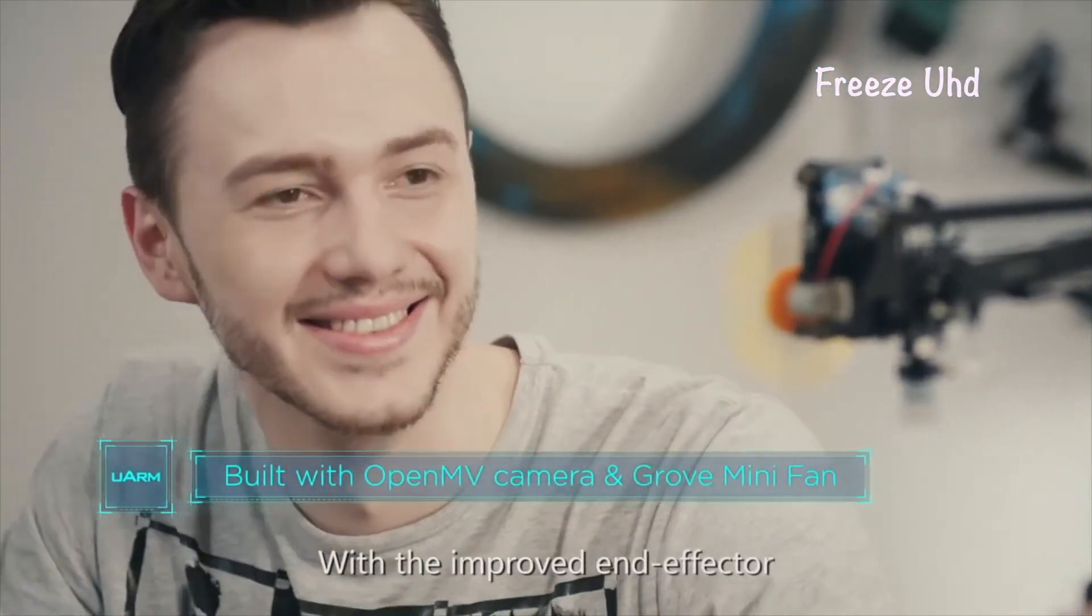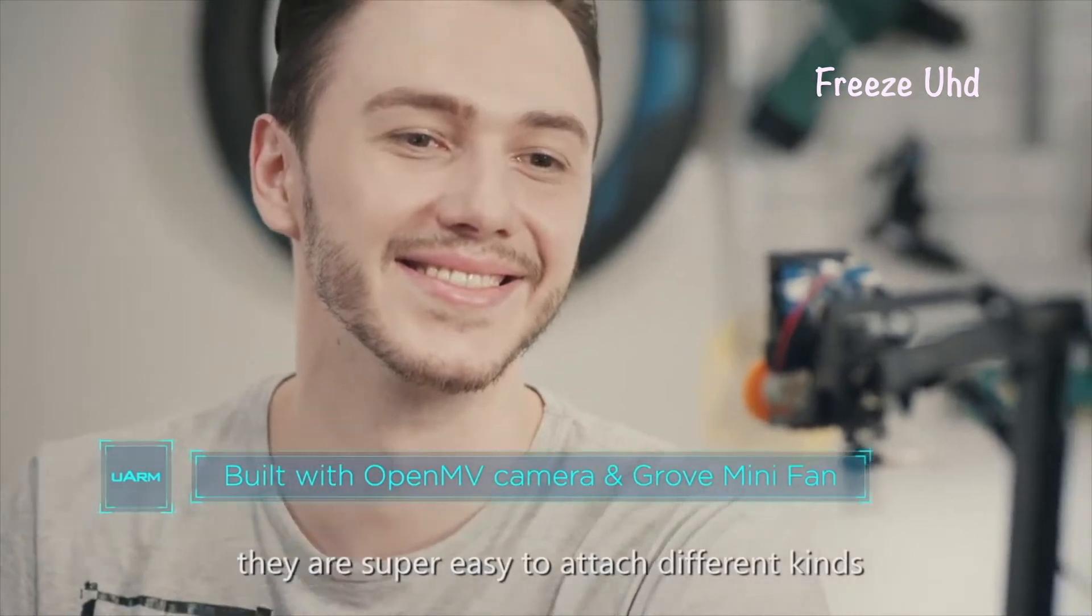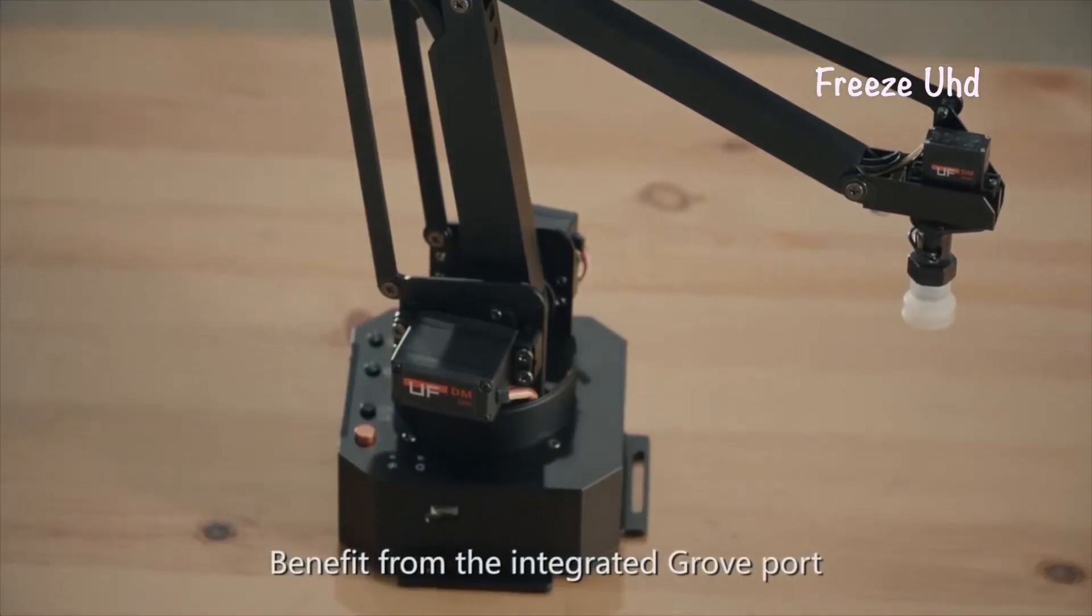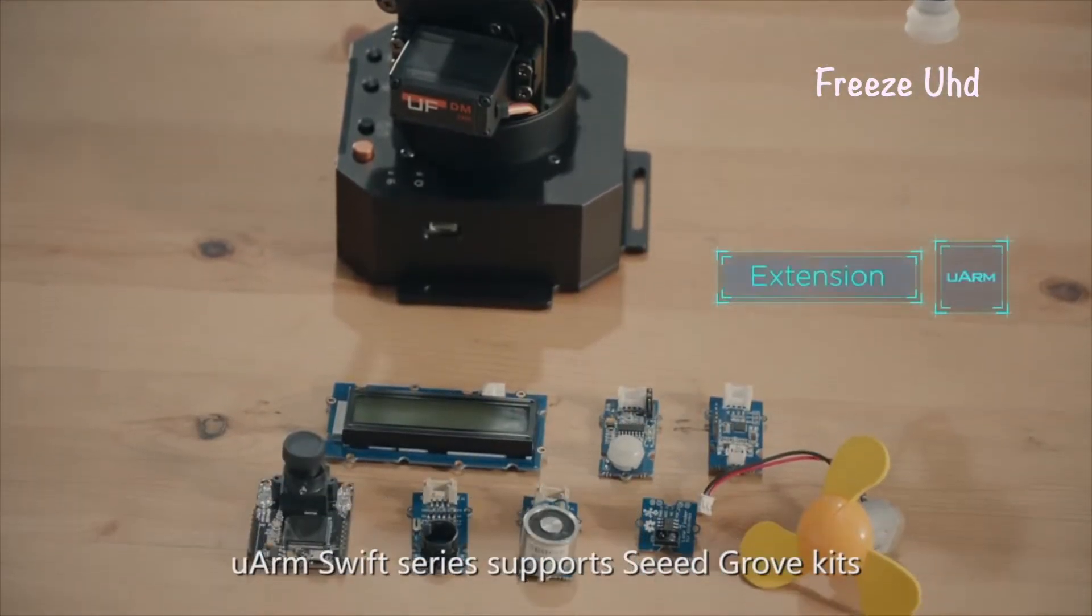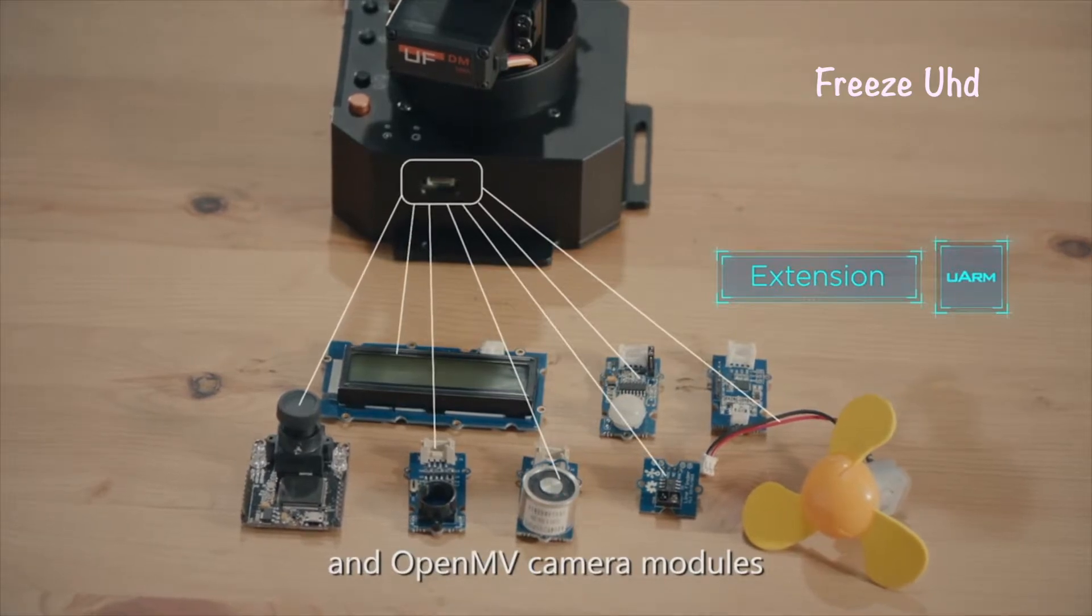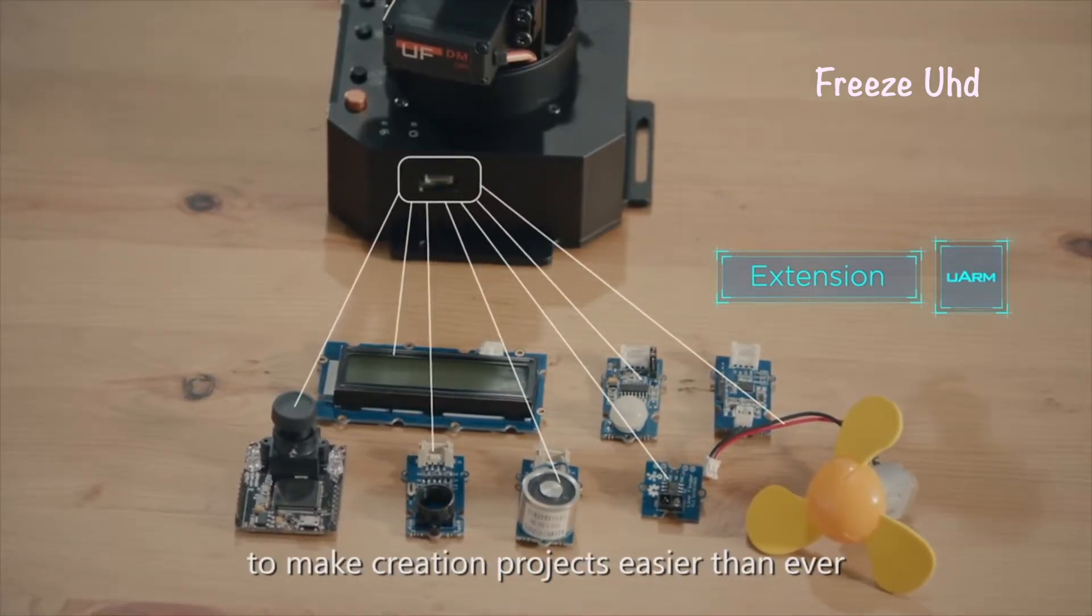With the improved end effector, they are super easy to attach different kinds of sensors, actuators. Benefit from the integrated grove port, U-Arm Swift series supports seed grove kits and open-MV camera modules to make creation projects easier than ever.